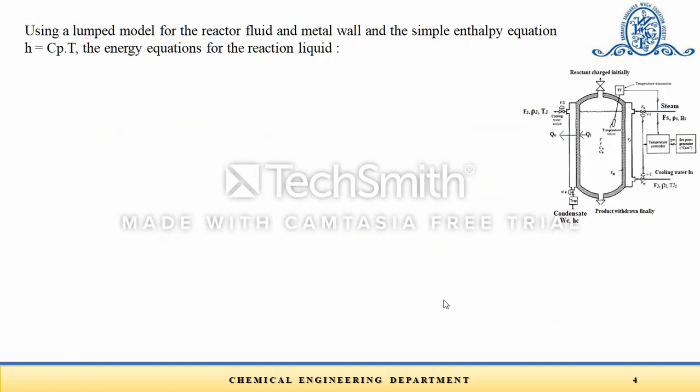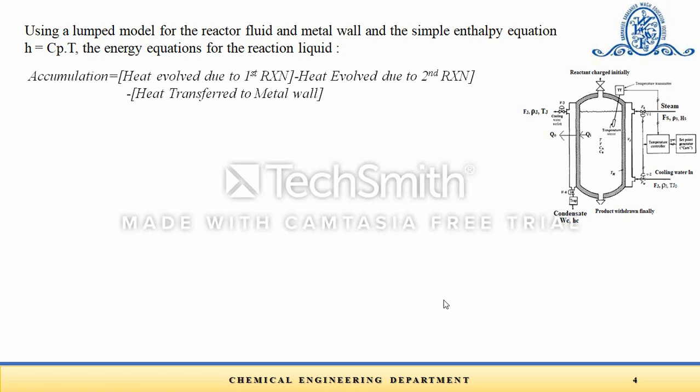Now we apply the lumped model for the reactor fluid and metal wall energy equation. The energy equation for the reactor fluid is: accumulation equals heat evolved due to the first reaction minus heat evolved due to the second reaction plus heat transfer to the metal wall. Flow of energy in and out due to bulk flow is absent here since there is no inflow or outflow. Heat is only added or evolved due to the exothermic heats of reaction for the first and second reactions.